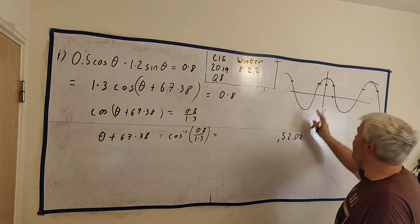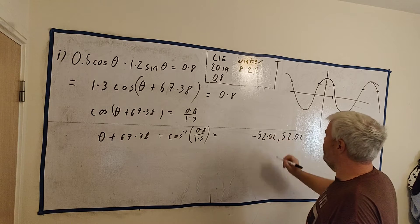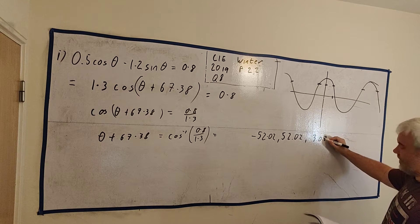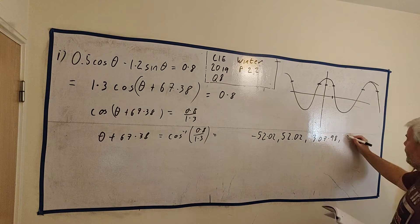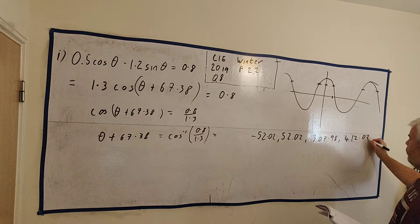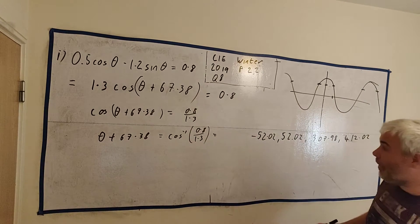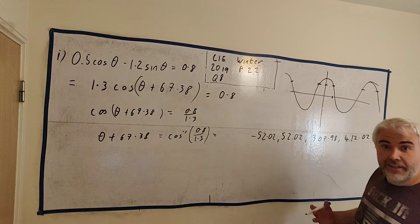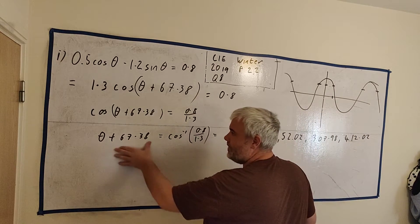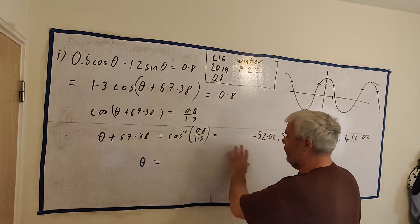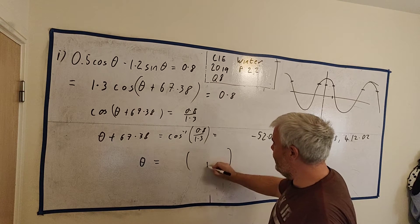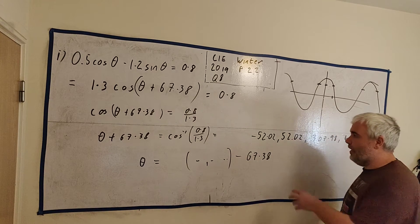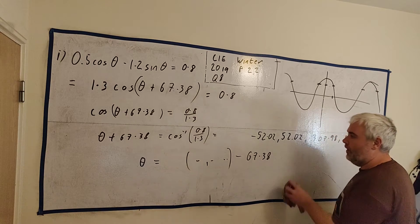The calculator gave us 52.02°. But just as valid is the answer 307.98°, and then 412.02° would be the next one. You can keep going in both directions. Lots of students just use the first one or maybe two answers. In this question, that's actually wrong, because what we need is θ — we still have to subtract 67.38° from all of these values.